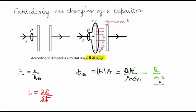To have a term of dQ/dt, we can differentiate both sides with respect to time. If we differentiate the flux with respect to time, we get dΦ_E/dt = (1/ε₀)(dQ/dt). Since dQ/dt is the current, we can write i = ε₀(dΦ_E/dt).